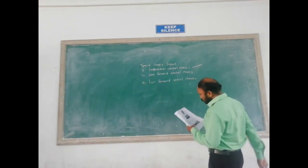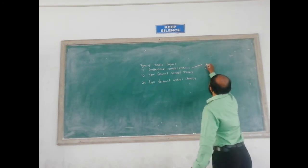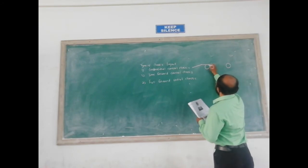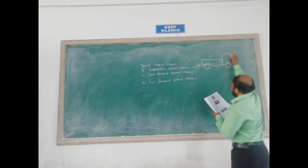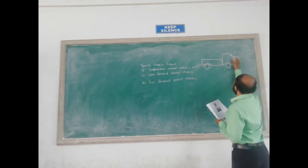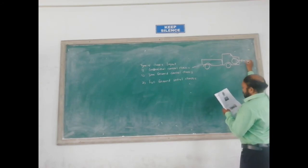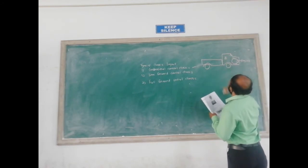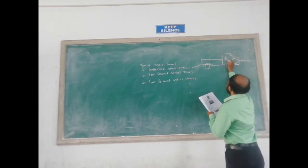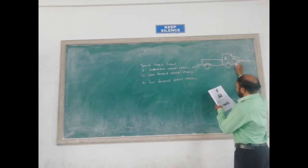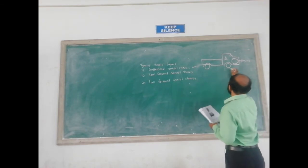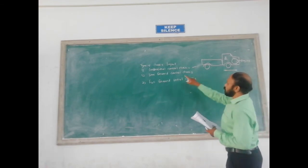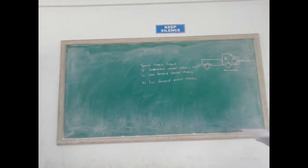If we see the diagram related to conventional control chassis — considering this is the vehicle, this is the engine, and the driver is located here — the distance between the driver and the engine is significant because the engine is located separately at the front. This is called conventional control chassis. In this case, the space is not completely utilized, which is the disadvantage.